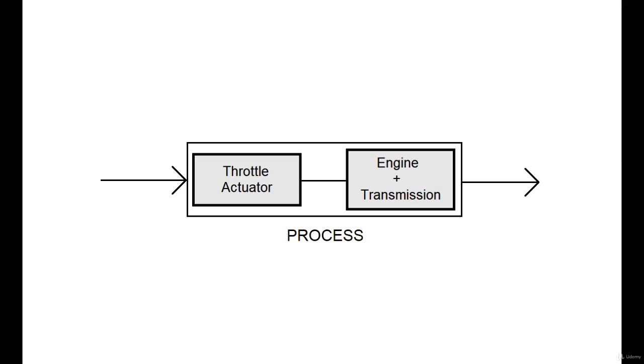Our process consists of a throttle actuator which feeds fuel into the engine. Our input to the system is the angle of the gas pedal, and our output is the speed or velocity of our vehicle. The greater the angle, the faster the vehicle will go. The smaller the angle, the slower the vehicle will go.